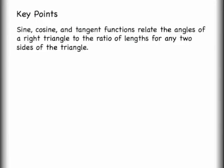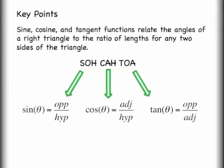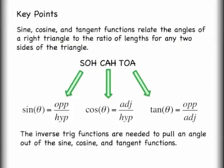Let's review the key points. The sine, cosine, and tangent functions relate the angles of a right triangle to the ratio of lengths of any two sides. Sine doesn't look at the length of one side — it looks at a comparison between two sides through a ratio. Remember SOH-CAH-TOA to recall which trig function corresponds to which sides. Also remember to use inverse trig functions when you need to pull the angle out of sine, cosine, or tangent. That wraps up right triangle math.